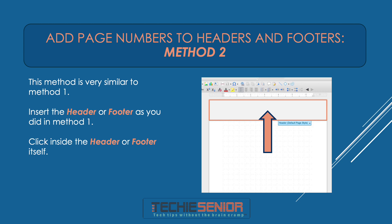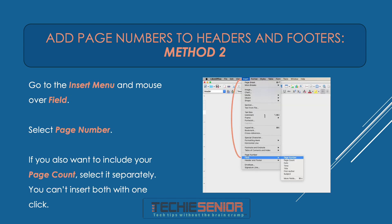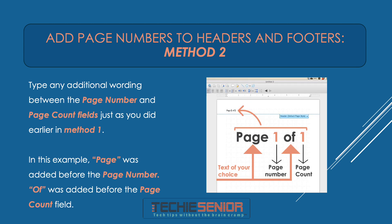Add Page Numbers to Headers and Footers — Method 2. This method is very similar to Method 1. Insert the header or footer as you did in Method 1. Click inside the header or footer itself. Go to the Insert menu and mouse over Field. Select Page Number. If you also want to include your page count, select it separately — you can't insert both with one click. Type any additional wording between the Page Number and Page Count fields, just as you did in Method 1. In this example, "Page" was added before the Page Number, and "of" was added before the Page Count field.